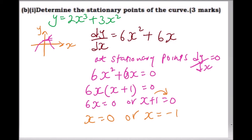Substituting x equals zero into the function: 2 times 0 cubed plus 3 times 0 squared equals zero, so y equals zero. Substituting x equals minus one: minus one cubed times 2 is minus 2, and minus one squared times 3 is 3, so minus 2 plus 3 equals 1, giving y equals one.